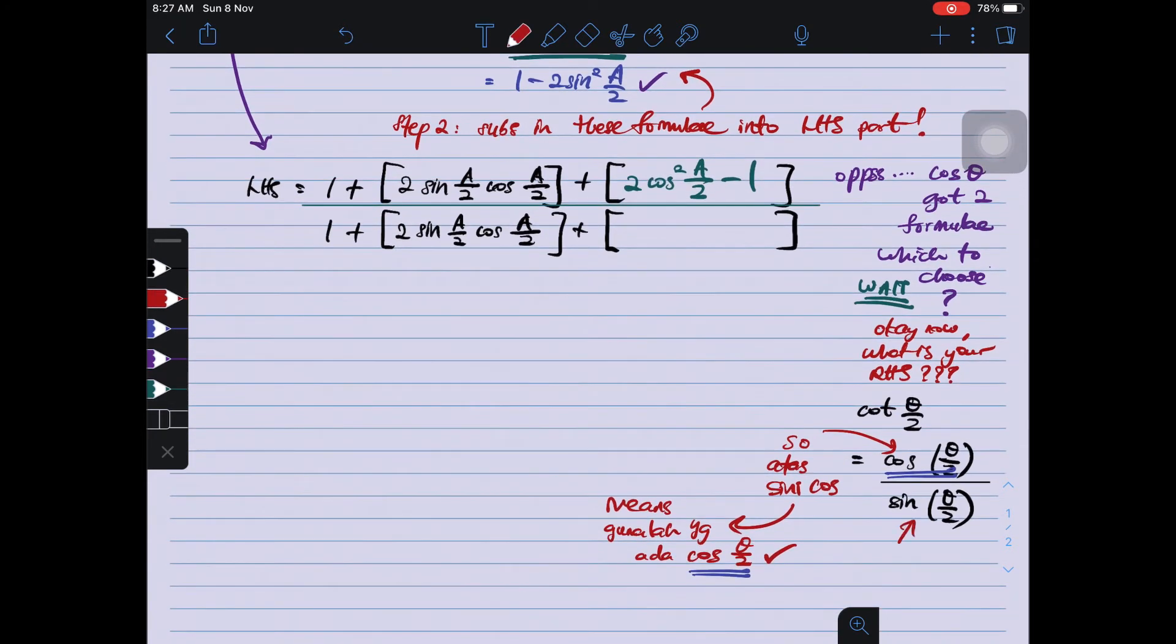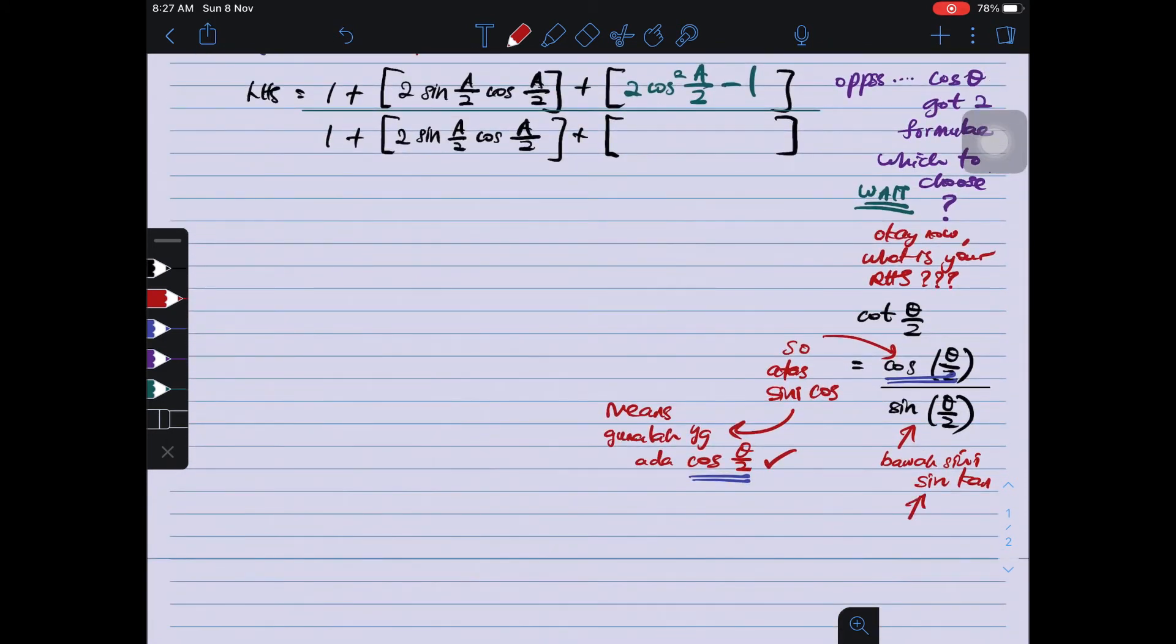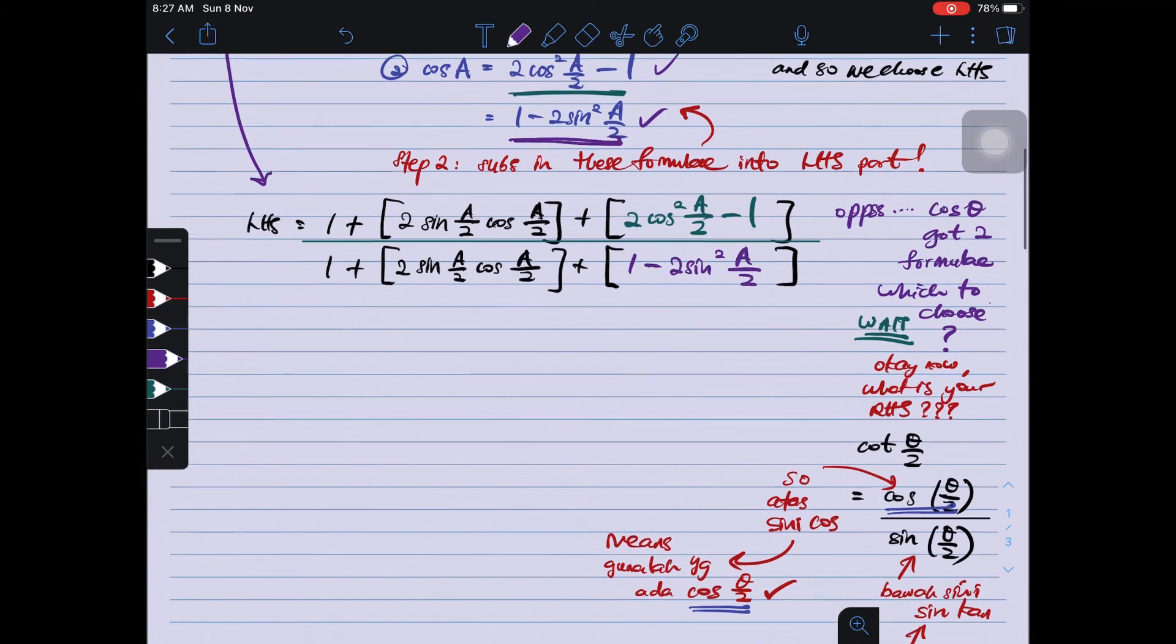So at the answer, sin is at the bottom, at the denominator. So I need to expect at the bottom I need to use the double angle formula that has sin. So here I should use 1 minus 2 sin squared A over 2.